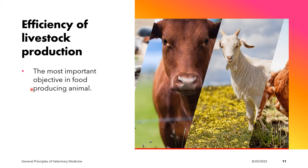Animal production is considered efficient if the output we get from our animals is worth more than our total input cost — meaning the products, such as meat and milk, will be worth more than the expenses we have invested in our animals.